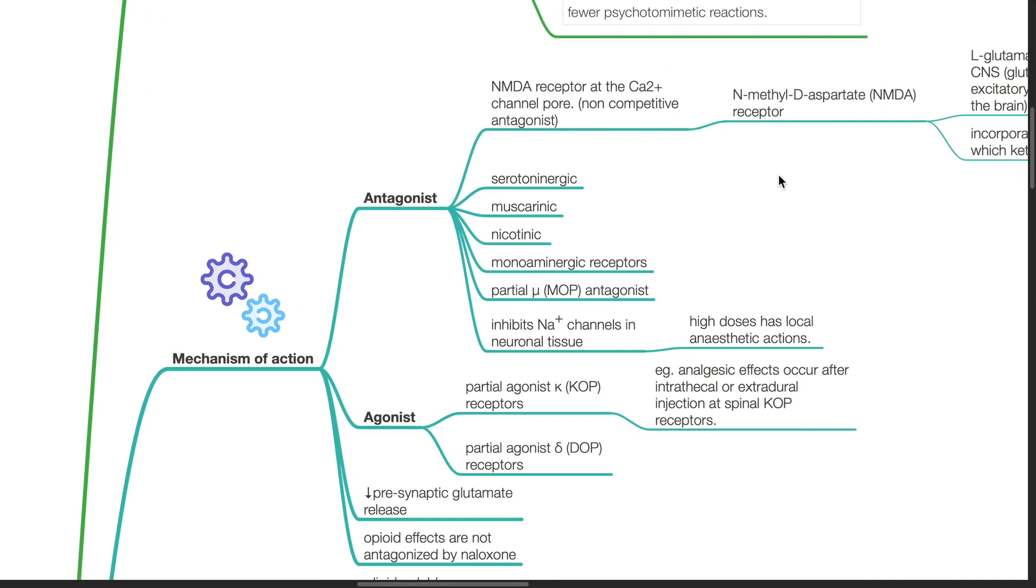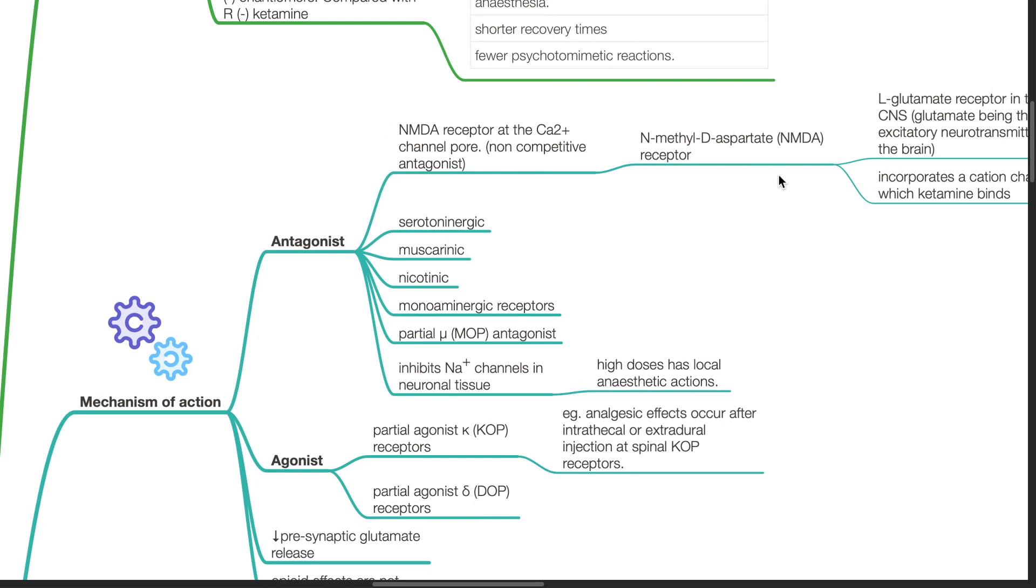Mechanism of action. Ketamine is an antagonist at the NMDA receptor at the calcium channel pore, at serotoninergic, muscarinic, nicotinic, monoaminergic, and MOP receptors. Ketamine also inhibits sodium channels in neuronal tissues.